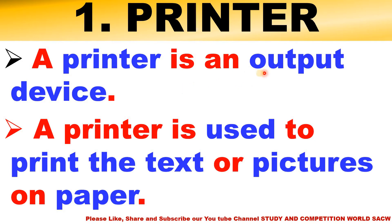You may be thinking: what is an output device? I will discuss in Chapter 4 what is input, what is output, and what are input-output devices. A printer is used to print text or pictures on paper. If anybody asks you what a printer is, you can say: a printer is an output device used to print text or pictures on paper.